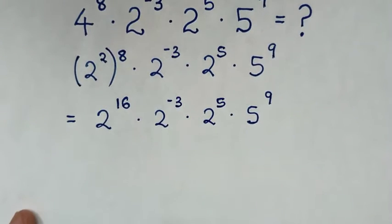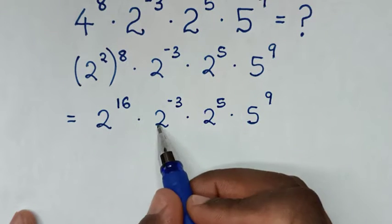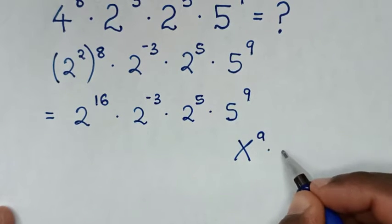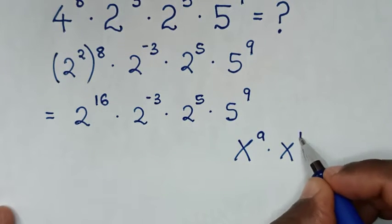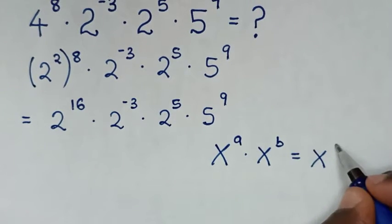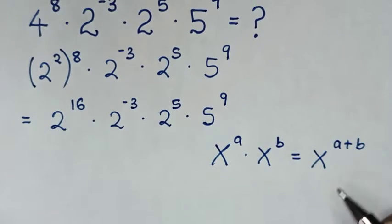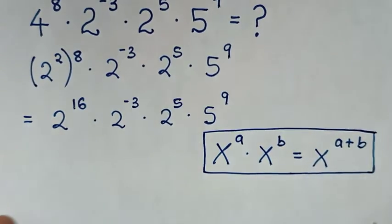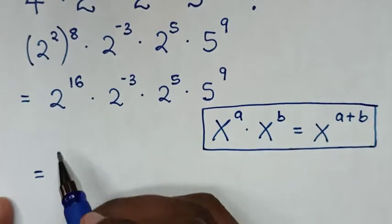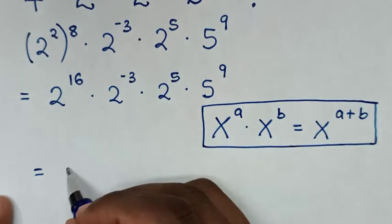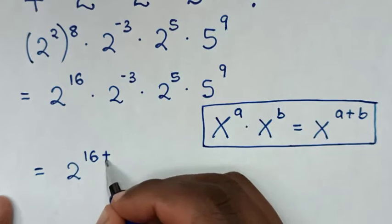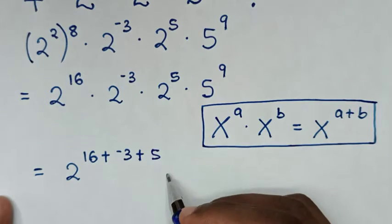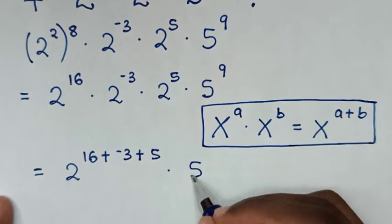Now, from this exponent with the same base of 2, we'll apply the exponential rule that x power of a times x power of b is equal to x power of a plus b. So it will be equal to 2 power of 16 plus negative 3 plus 5, then times 5 power of 9.